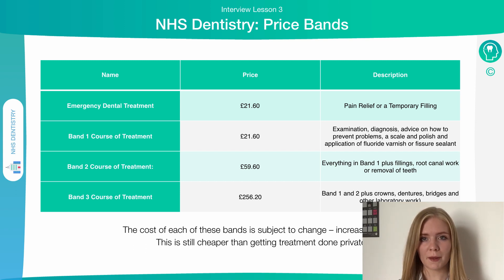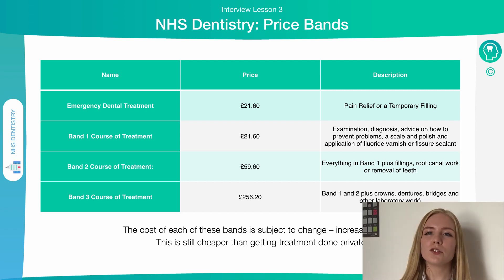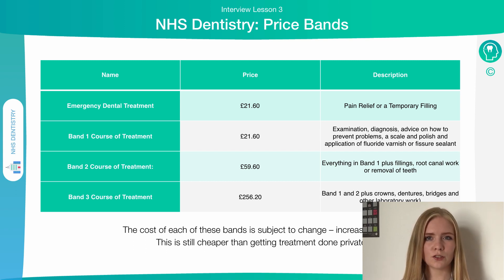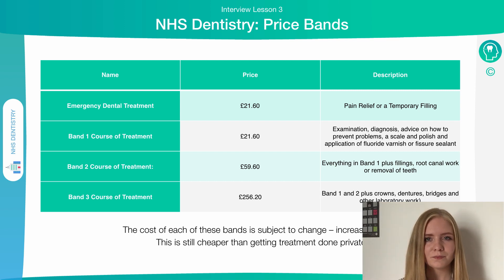Band 2 is slightly more expensive and includes fillings, root canal work, and also removal of teeth, so if you have to have any extractions. If you do have any Band 2 treatment, it includes all the Band 1 treatment as well. So if you had your checkup and then also had a tooth extracted, you pay Band 2 alone — you wouldn't be paying the price of both Band 2 and Band 1. Once you get to the higher bands, they also include all of the lower band treatment.